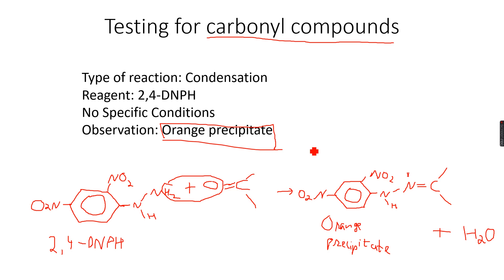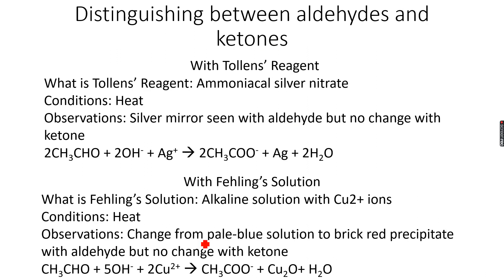Let's move forward to distinguishing between aldehydes and ketones. Let's say we had a random compound, took a sample, tested it with 2,4-DNPH, and got an orange precipitate - so we know it was a carbonyl compound. But how do we know whether that carbonyl compound is an aldehyde or a ketone?